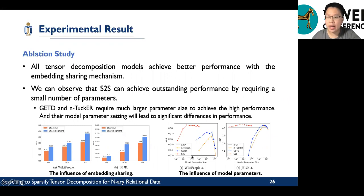S2S can achieve outstanding performance but requires a small number of parameters. And we also observe that GETD and N-Tucker require much larger parameter size to achieve high performance. And their model parameter settings will lead to significant difference in performance. This means that it probably can lead to difficulty in practice.